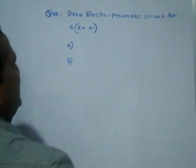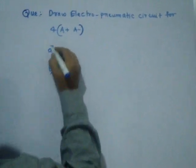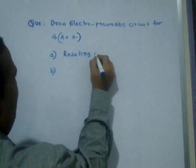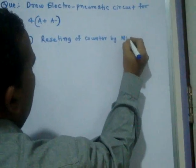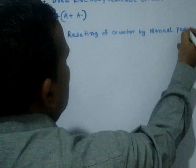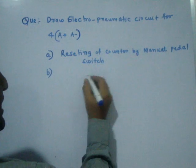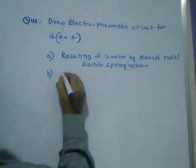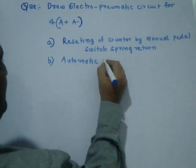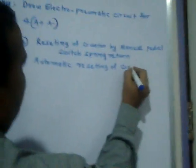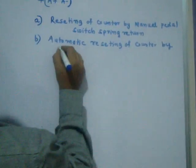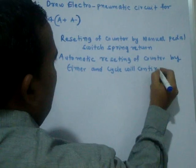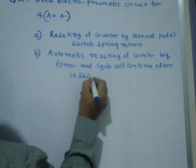So how to reset? There are two types of resetting. The first one is resetting of the counter by manual — by using a paddle switch. The second one is the automatic resetting — resetting of the counter by timer — and the cycle will continue after 10 seconds.